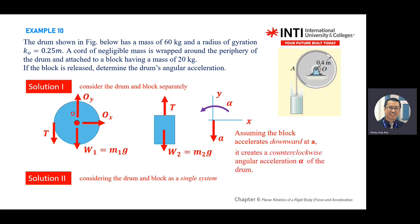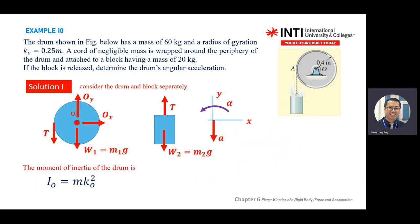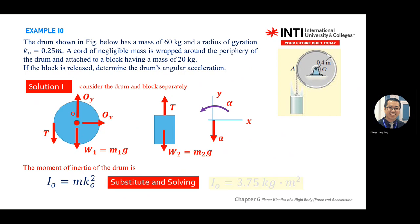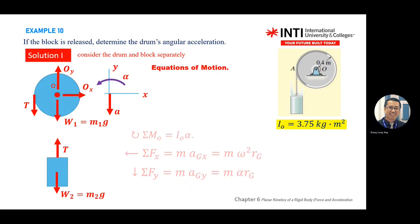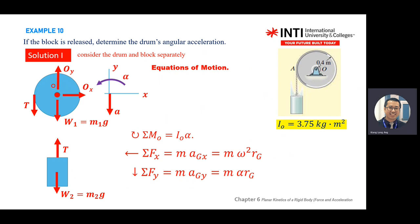Calculate the moment of inertia of the drum: I equals M times K squared — refer to the chart. You have M and K, so find I. Then apply the three equations: moment at O gives I_O times alpha. F equals MA — change A to omega squared R for normal, and alpha R for tangential. Consider normal and tangential directions. Substitute all values to solve for the unknowns.